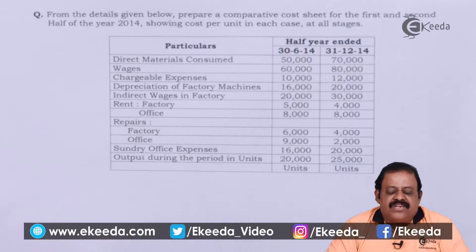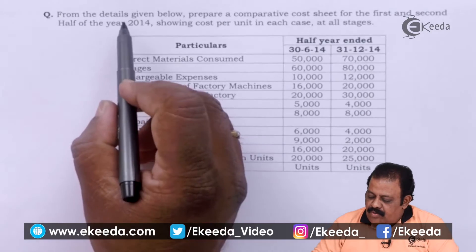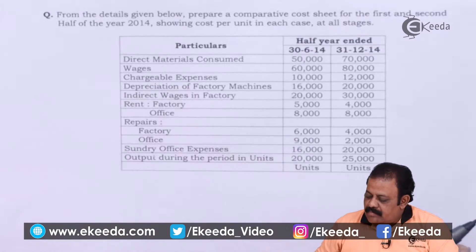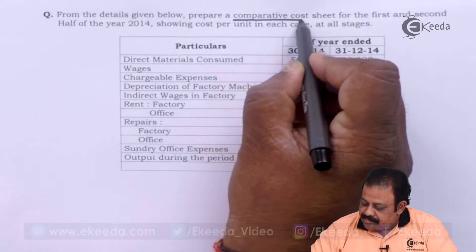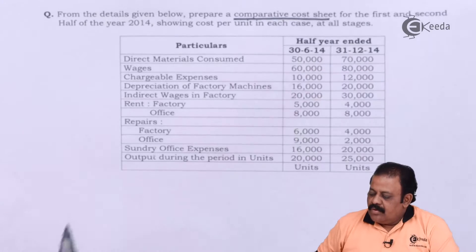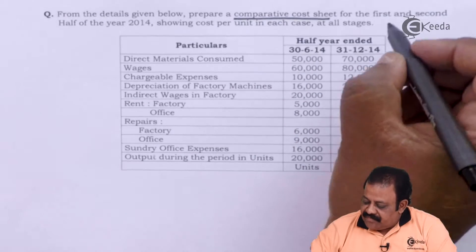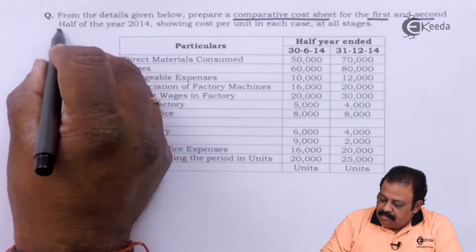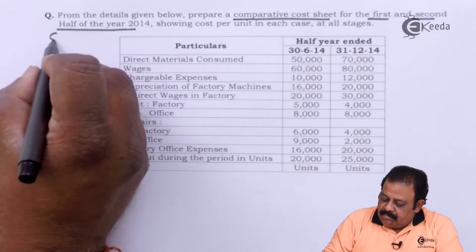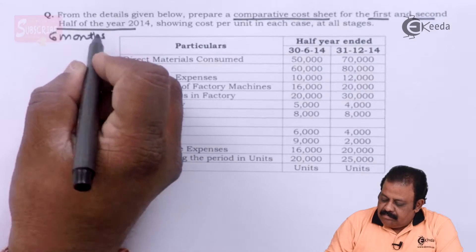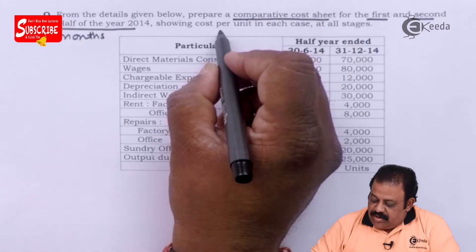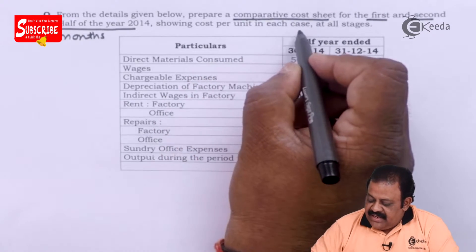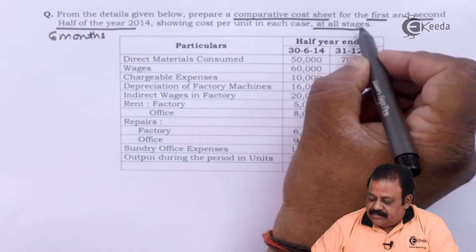Let us start with the question. From the details given below, prepare a comparative cost sheet for the first and second half — that is, a six-month period for the year 2014 — showing cost per unit in each case at all stages.